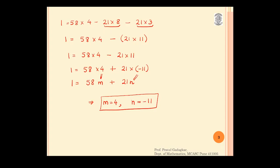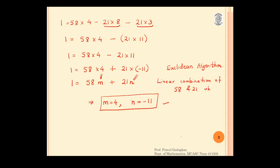This method of reversing and finding the values of M and N is called the Euclidean algorithm. These M and N form a linear combination of A and B — specifically, a linear combination of 58 and 21 which gives the GCD, which is 1. This finishes our problem. Thank you.